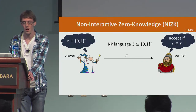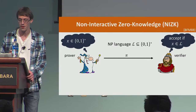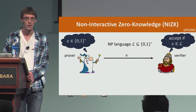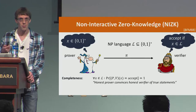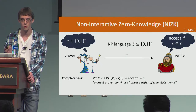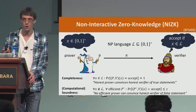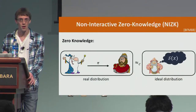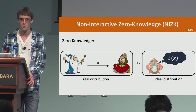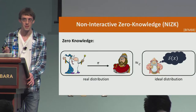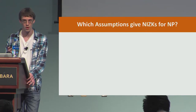I'm going to be talking about non-interactive zero knowledge arguments. This is a setting where a prover wants to convince a computationally bounded verifier that some statement X is in some NP language L. He's allowed to send a single message, and it should satisfy completeness — a correct proof on a true statement should convince the verifier — soundness, and zero knowledge, namely that a correct proof on a true statement should be simulatable in polynomial time given only the instance, without any witness for X being in the language.